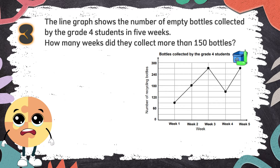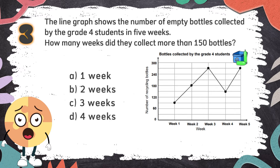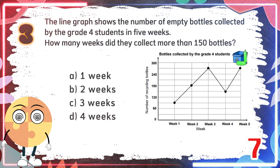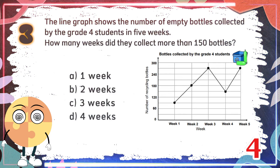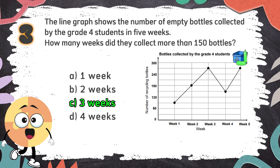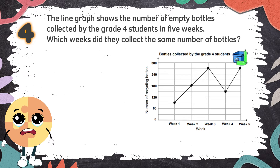Number 3. The line graph shows the number of empty bottles collected by the grade four students in 5 weeks. How many weeks did they collect more than 150 bottles? The choices are A. 1 week, B. 2 weeks, C. 3 weeks, D. 4 weeks. The correct answer is C. 3 weeks.